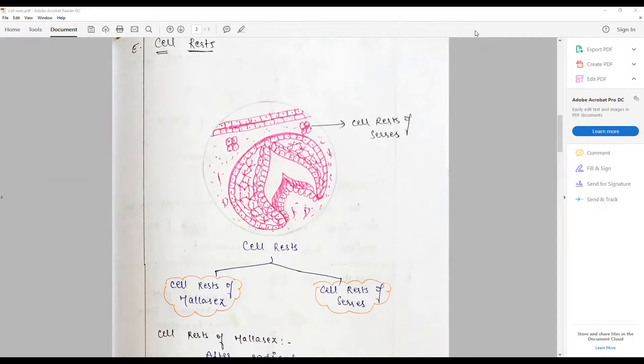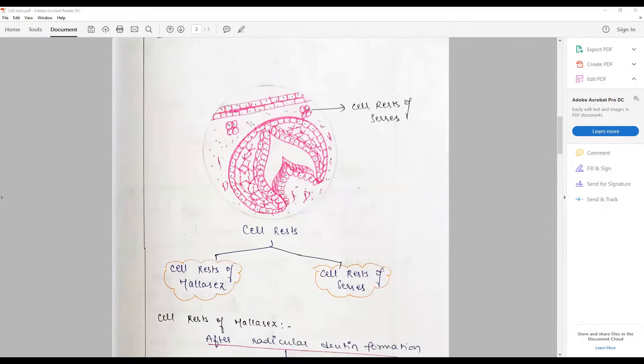Cell rests - the most common cell rests that we discuss in oral histology are of two types: cell rest of Malassez and cell rest of Serres. So this candidate has identified the cell rest of Serres and Malassez correctly.